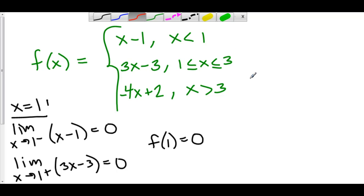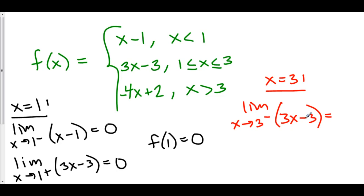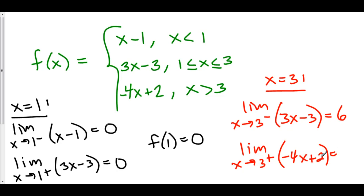Now let's check the other Frankenstein point, x equals 3. The limit as x approaches 3 from the left: we use the middle function 3x minus 3, and 3 times 3 minus 3 gives 6. From the right-hand side, we use negative 4x plus 2, and plugging in 3 gives negative 12 plus 2 equals negative 10. The limit does not exist, so the function is not continuous at x equals 3. Therefore, our function is continuous at x equals 1, but it is not continuous at x equals 3.